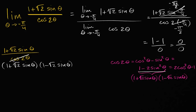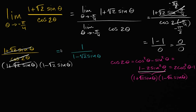Now we have nice canceling: the one plus square root of two sine theta in the numerator cancels with that same factor in the denominator, leaving us with one over one minus square root of two sine theta. For these expressions to truly be equal, they must share the same domain — so we note that theta does not equal negative pi over four, since the original expression was not defined there.